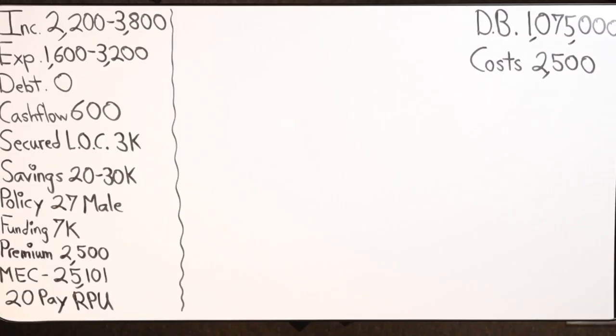We have a secured personal line of credit for $3,000. He also has a nice savings built up, $20,000 to $30,000. I believe he's at $30,000 right now, but between $20,000 and $30,000. 27-year-old male, and now we're stepping into phase two.